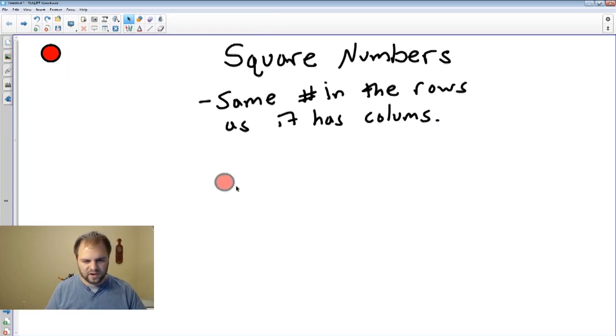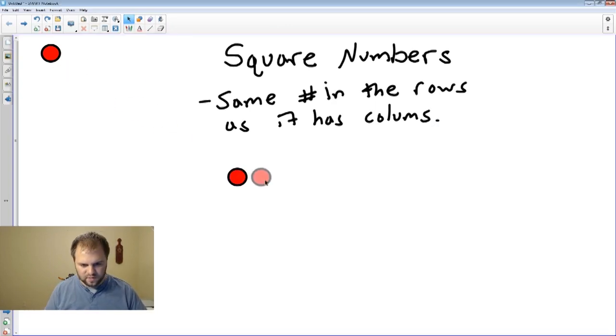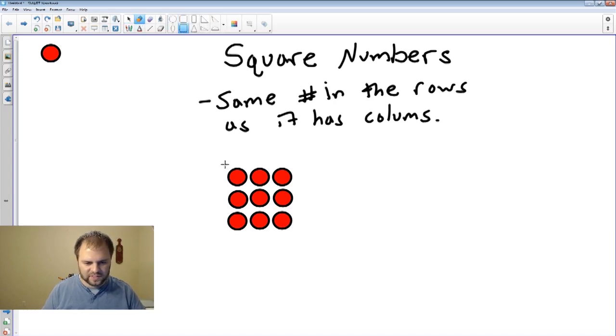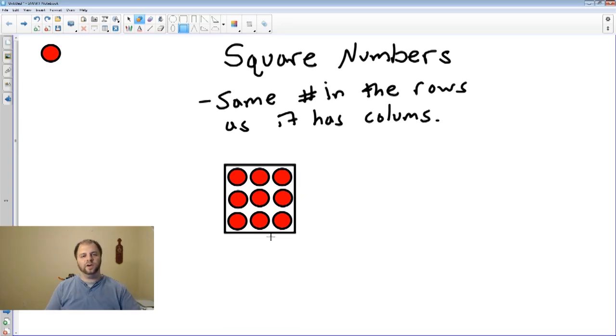For an example, we're going to pick our nifty counters right here. I'm going to make an array that has three columns and three rows. Now you're probably wondering why is it called a square? Well, it's very simple. When I make it, you'll easily see. Right now what you are looking at is a square array.